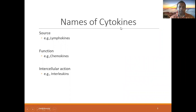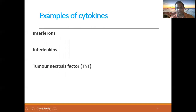Classification is done depending on the source. Lymphokines come from lymphocytes. Chemokines are involved in attraction and chemotaxis. Interleukins have intracellular actions. Examples of cytokines include interferons, interleukins, and tumor necrosis factor. These are very important in terms of immunity.